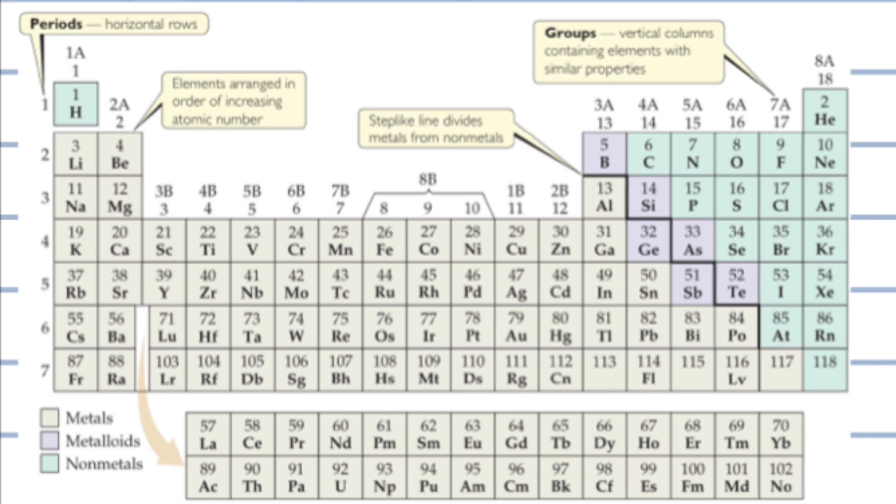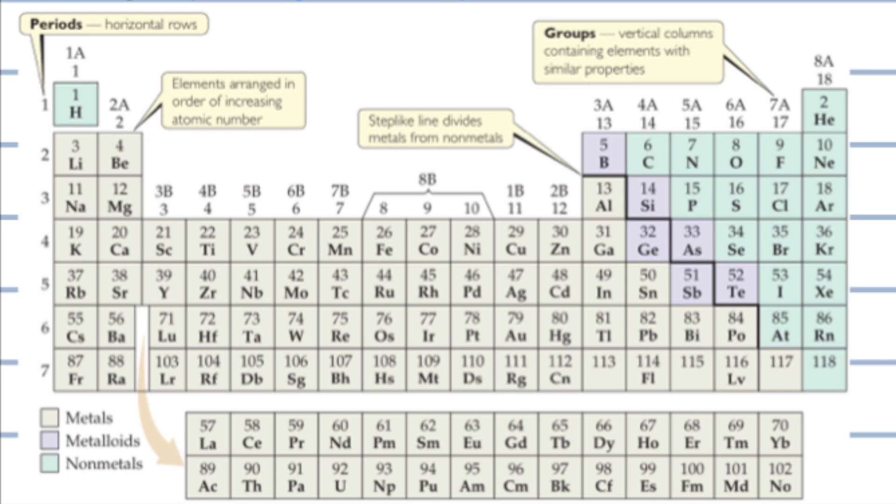Vertical columns are called groups. Group 1A elements are the alkali metals, like lithium, sodium, and potassium. Group 2A elements are the alkaline earth metals, like beryllium, magnesium, and calcium. Group 6A are the chalcogens, like oxygen, sulfur, and selenium. Group 7A are the halogens, like fluorine, chlorine, and bromine. Group 8A are the noble or rare gases, like helium, neon, and argon.